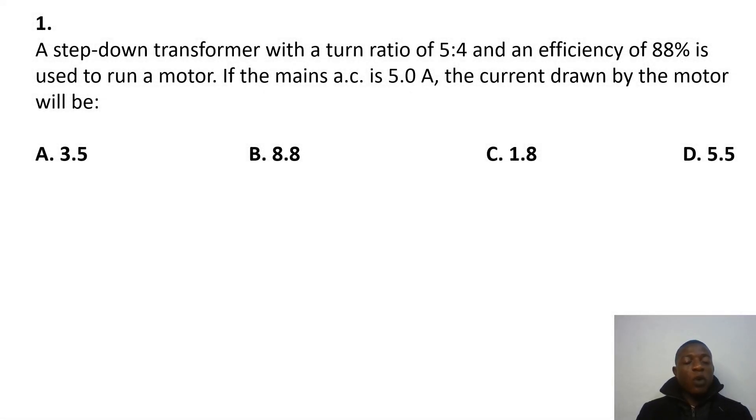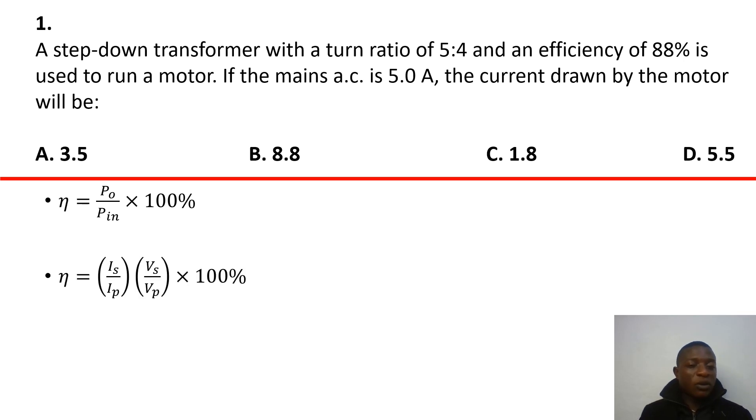The very first question says, a step-down transformer with a turn ratio of 5 is to 4 and an efficiency of 88% is used to run a motor. If the main's AC is 5.0 amperes, the current run by the motor will be. So of course, we just need to write the efficiency equation for transformer and that's the efficiency equation, that's power output over power input times 100%. It's basically true for every other machine.